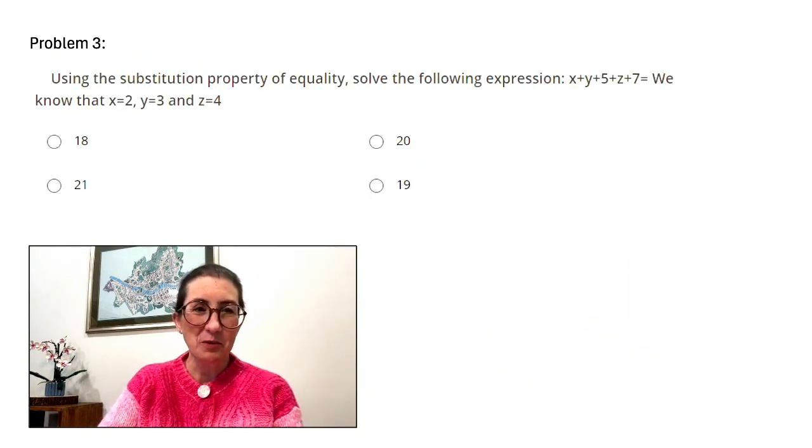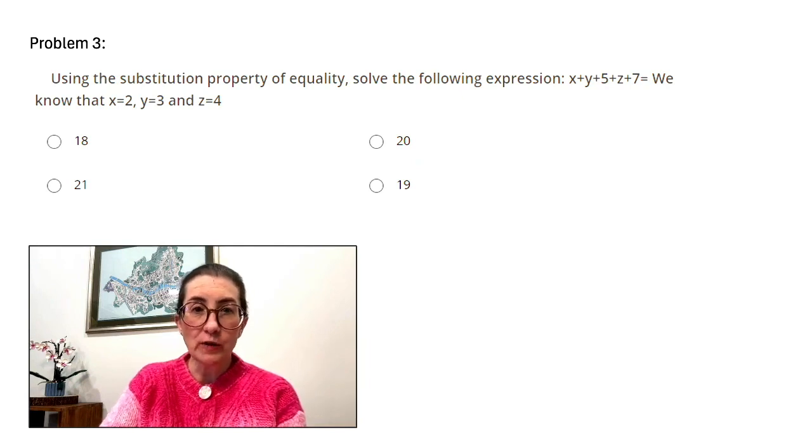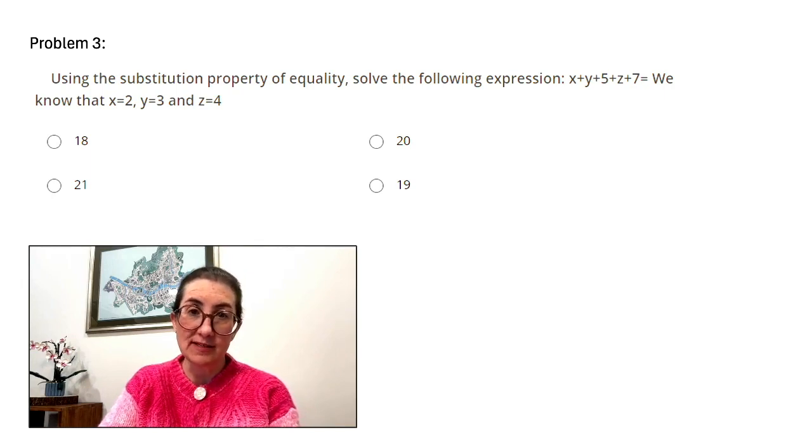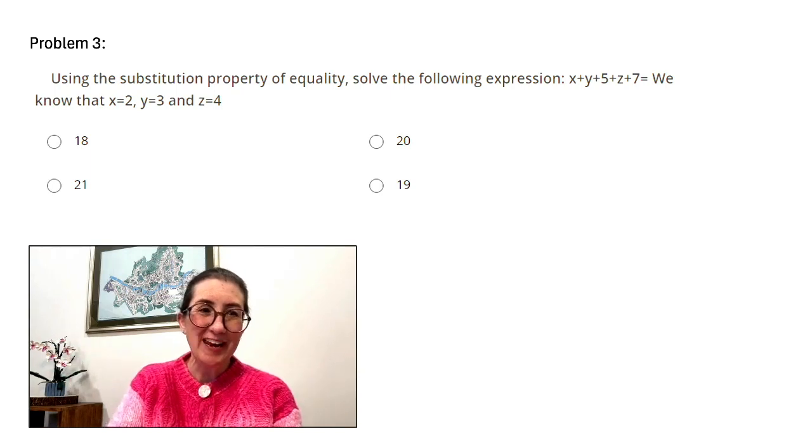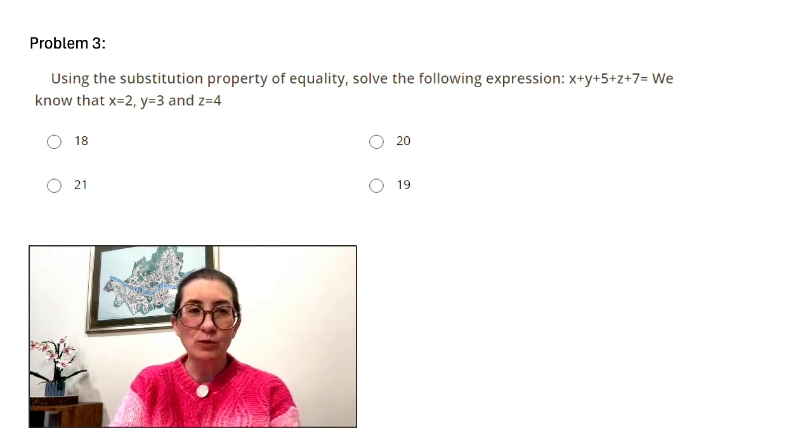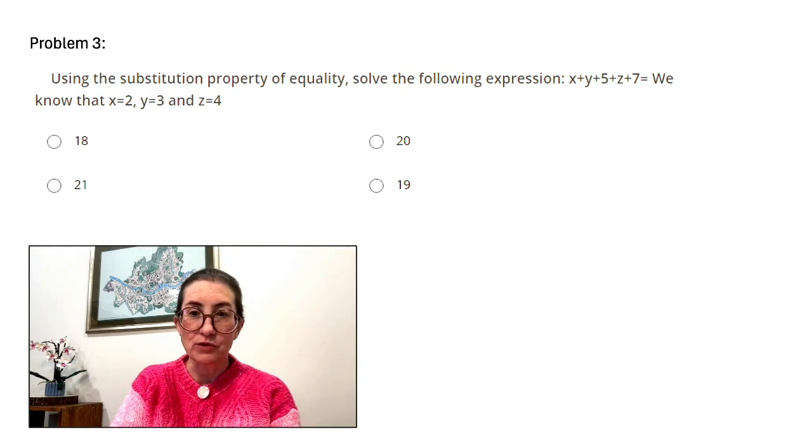Problem number three. Using the substitution property of equality, solve the following expression: x plus y plus 5 plus z plus 7 equals. We know that x equals 2, y equals 3, and z equals 4.